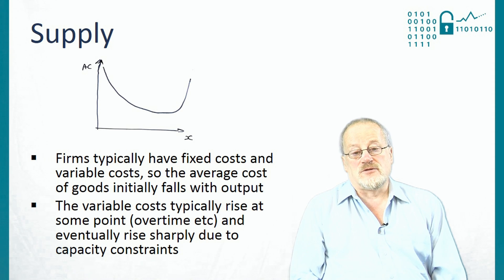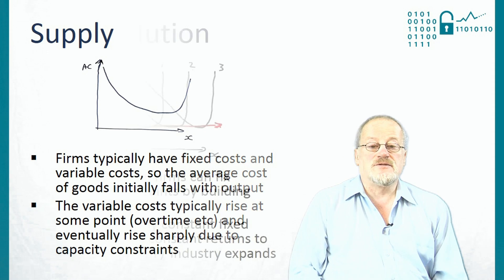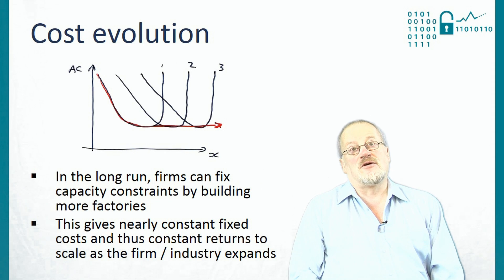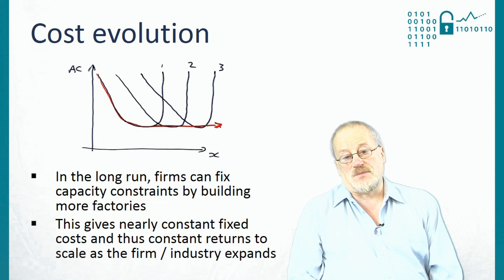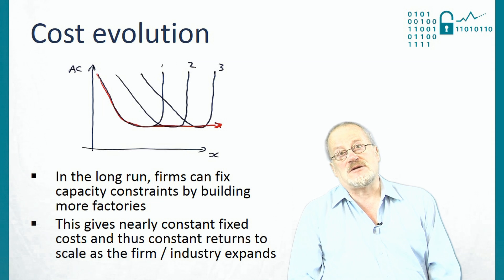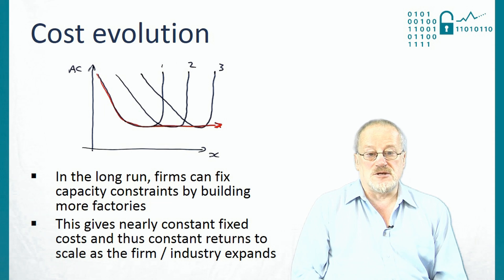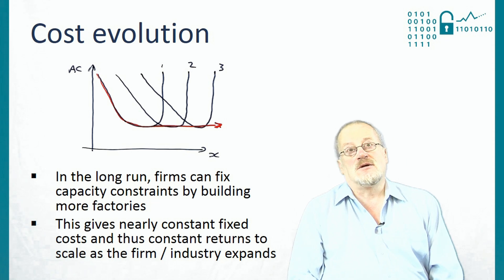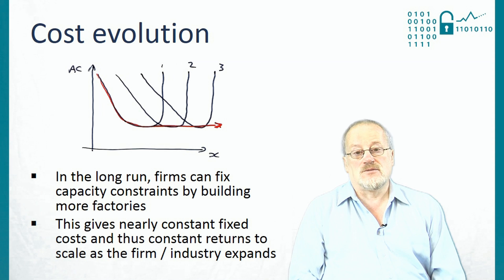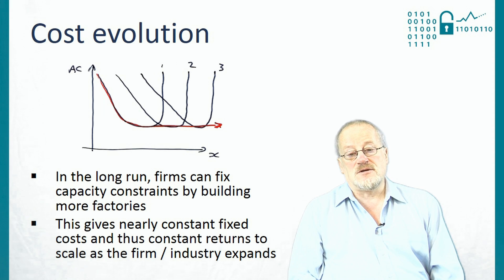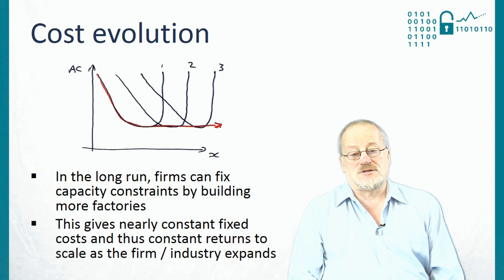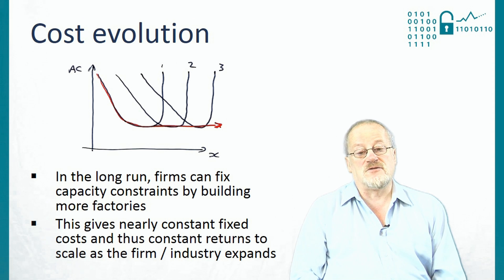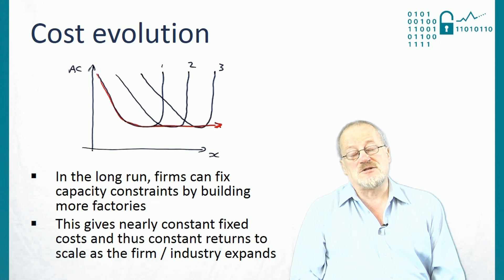In the long run, firms can increase capacity by building more factories. Somebody who owns a coal seam can dig more mines; somebody who makes cars can open factories in other countries. In the long run, this can give nearly constant fixed costs and thus constant returns to scale as the firm or industry expands.